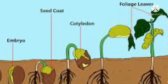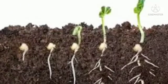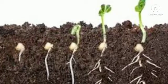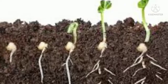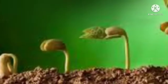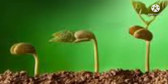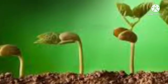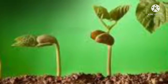First, the seed consumes water rapidly from the soil, resulting in swelling and softening of the seed coat, at a suitable temperature, in the process called imbibition. But water isn't enough to make the baby embryo grow.